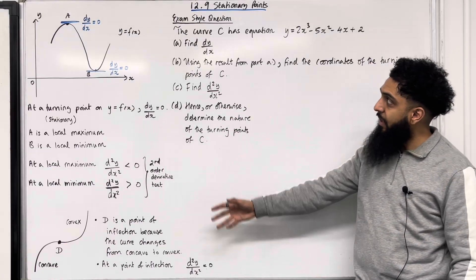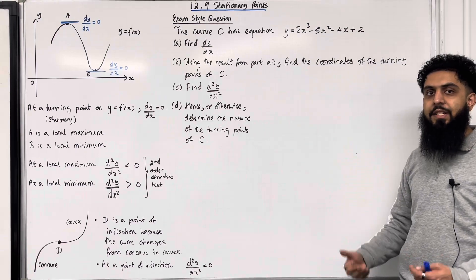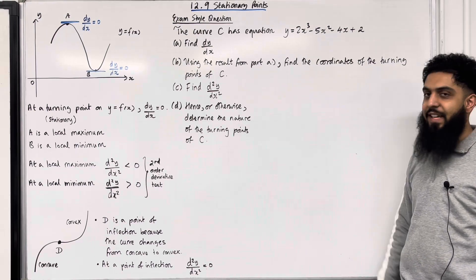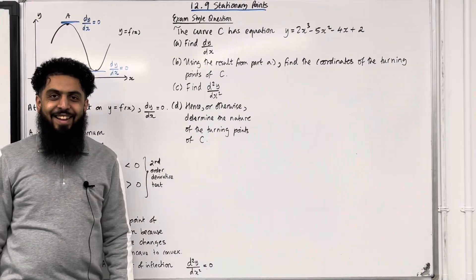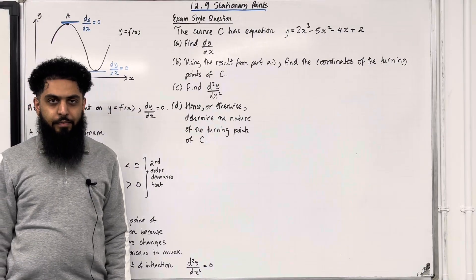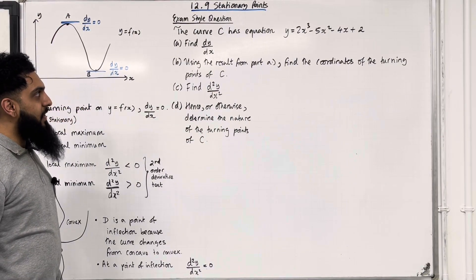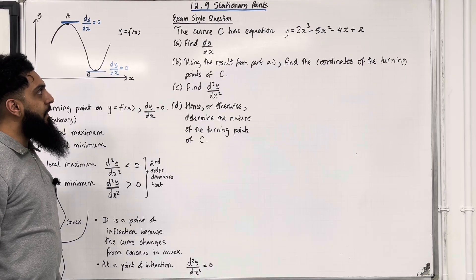Those are the key facts of 12.9 stationary points. I'll be implementing these key facts within this exam style question. Let's have a look at the exam style question. The curve C has equation y = 2x³ − 5x² − 4x + 2. Part A: find dy/dx.